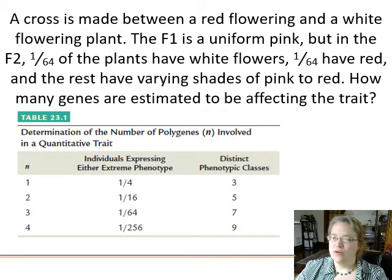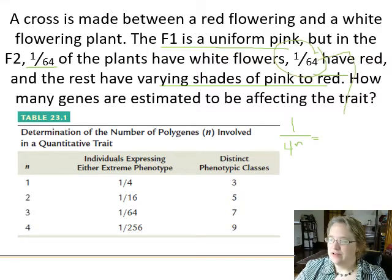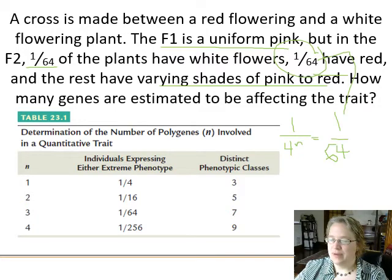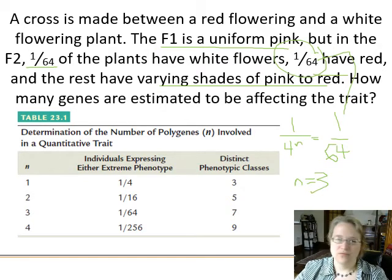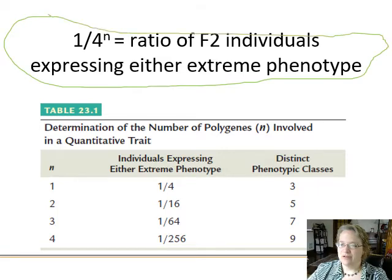Example: a cross between a red flowering plant and a white flowering plant gives a uniform pink F1. In the F2, roughly 1/64 of the plants have white flowers and 1/64 have red, with the rest having varying shades of pink to red. Using the formula 1 over 4^n equals the ratio of one extreme phenotype: 1/64, we ask what power of four equals 64. Four to the third power is 64, so n equals 3. There are three genes involved in this color phenotype.